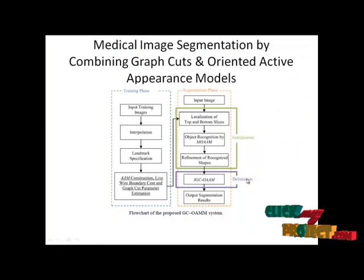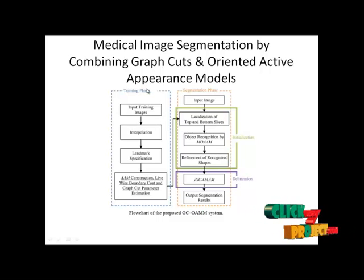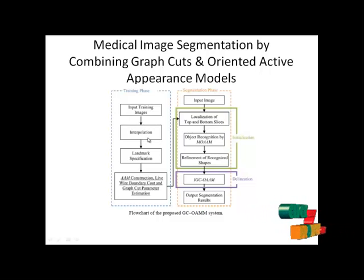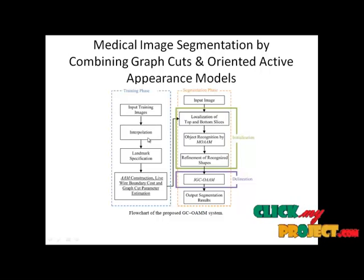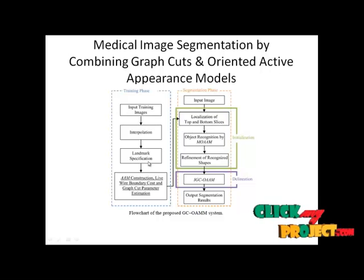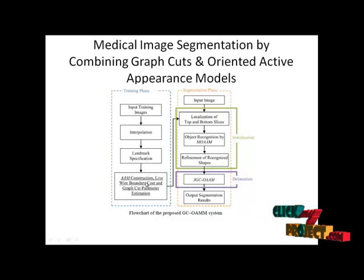The flow of the project starts with the training phase. In the training phase, the main steps are linear interpolation, in which we generate the same number of slices for the organ, then manual landmark specification. Once the landmarks are specified, the standard AAM method is used for constructing the model.